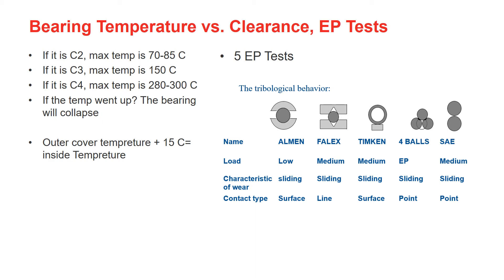What happens if the temperature goes over 300°C? The bearing will collapse. If you have a temperature gun to measure the bearing housing temperature, estimate the bearing inside temperature by adding 15°C to the reading. For example, if the outside housing temperature is 65°C, plus 15°C means the temperature inside the bearing is around 80°C.